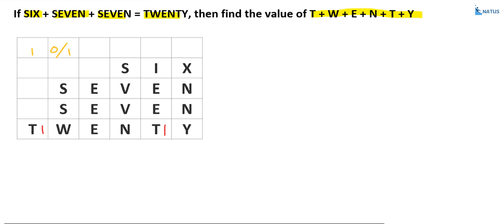Now S plus S equals W. The sum of these two values must be an even number if no carry exists. If carry exists, this number is odd. Suppose carry is 0, then S plus S equals W, and S must equal 5. But if carry-over from this column to this column exists, then 1 plus S plus S must be greater than or equal to 10.